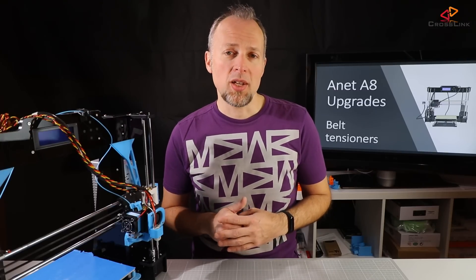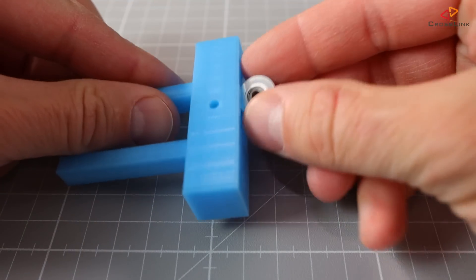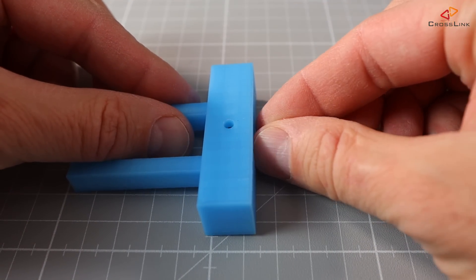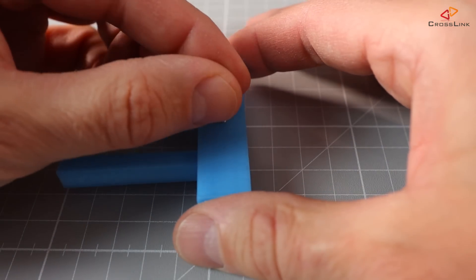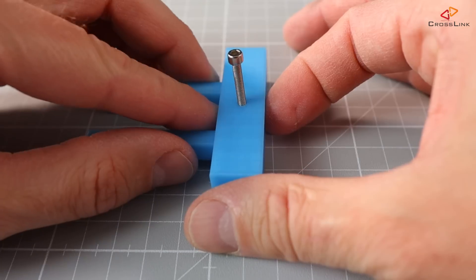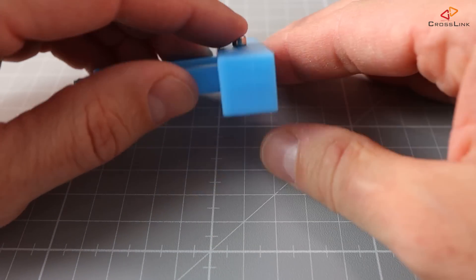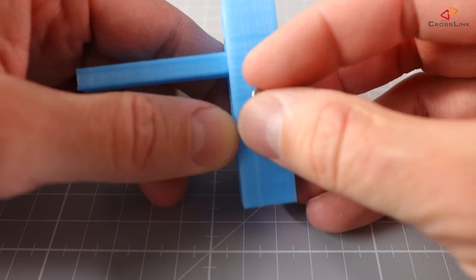Okay, let's start with the X-belt tensioner. Starting with the GT2 pulley which should slide into the opening of the X-tensioner easily. Then we use the 20mm M3 screw and one M3 nut to fix the pulley in the part.